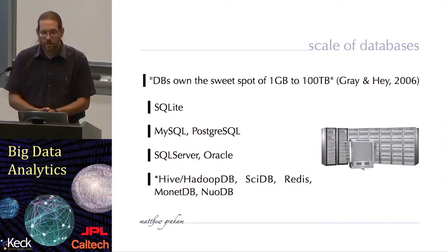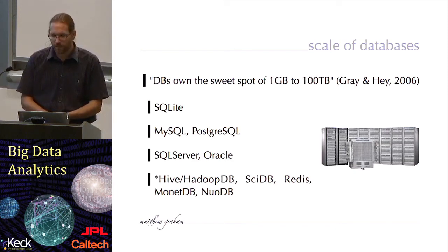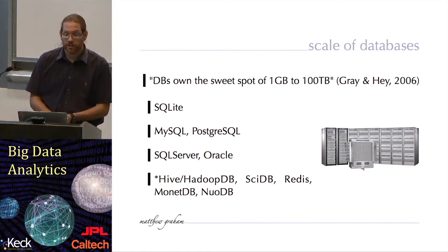Scales of databases. There's a great quote from Jim Gray, the Turing Award winner for database work from Microsoft Research and Tony Hay from 2006 where they said that databases own the sweet spot for managing data from about one gigabyte to about 100 terabytes. We've probably pushed the envelope at the high end on that with some new stuff which I'll be talking about in the sixth module in this series. But essentially, you can have a very lightweight database management system. SQLite is such an example. It's part of the Mac OS operating system automatically.